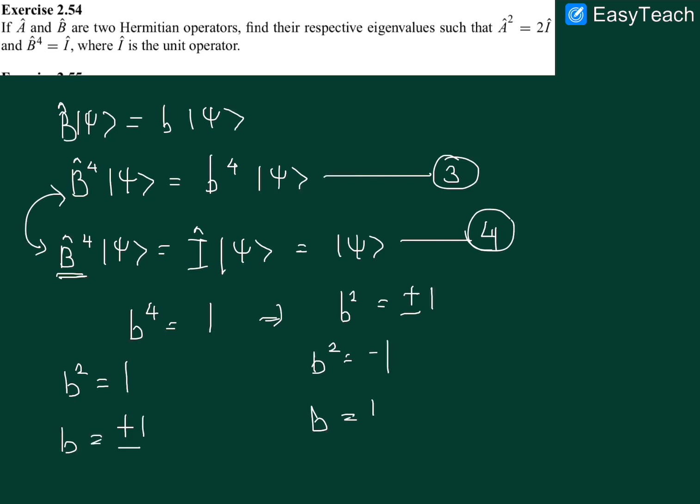But note that B is a Hermitian operator, so the eigenvalues of B will be real. So b belongs to real space, which from this we can say that these are discarded eigenvalues. So the eigenvalues of B cap will be plus minus 1 and eigenvalues of A will be plus minus root 2.